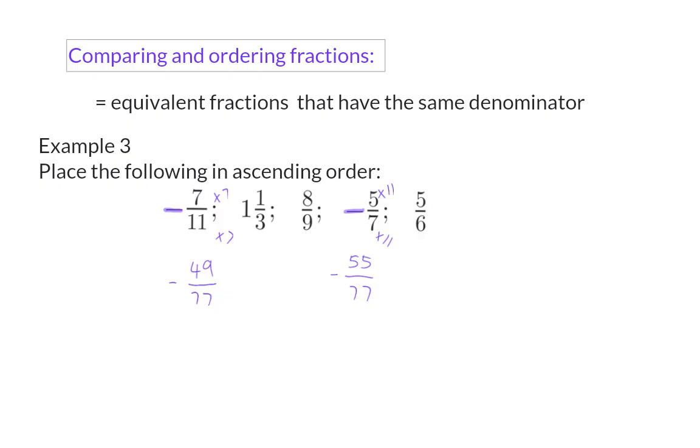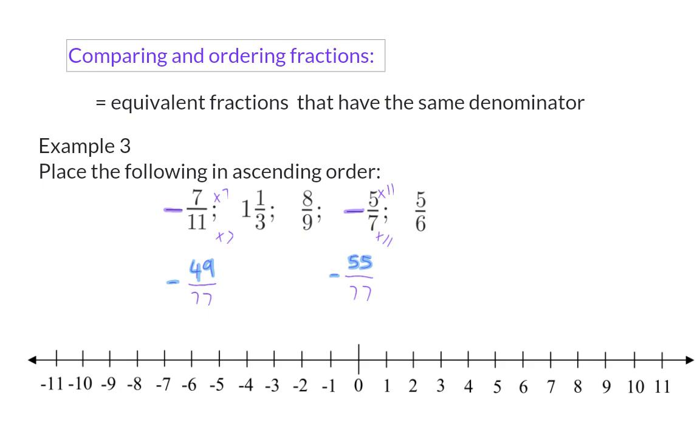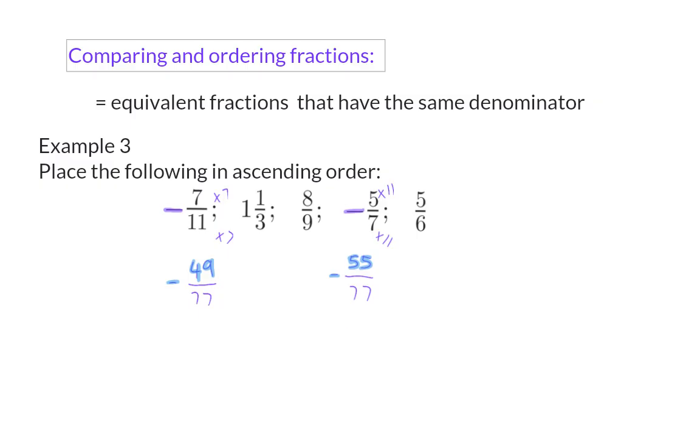And now that the denominators are the same, I can focus only on the two numerators and decide which one of these two is the smaller one. When it comes to negative values on the number line, you need to remember that the more negative the value is, the more to the left on the number line the number is, and that means the smaller the number is. That means the smallest of the two negative fractions I have is minus 55 over 77, and then we have minus 49 over 77.